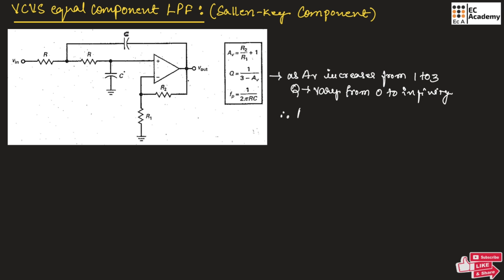Hence, we can say AV can vary only between 1 to 3. The pole frequency can be given as 1 divided by 2 pi RC.